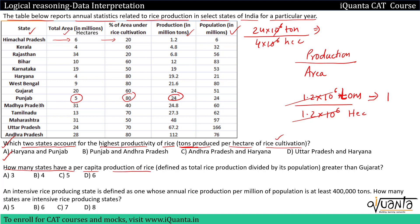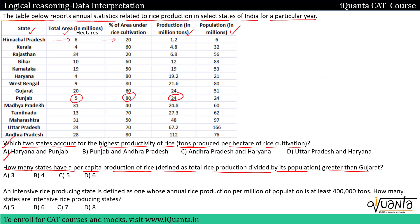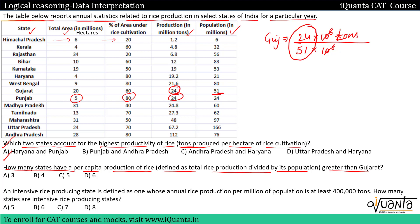The next question: how many states have a per capita production of rice — defined as total rice production divided by its population — greater than Gujarat? For Gujarat, total production is 24 million tons and total population is 51 million. So for Gujarat, the ratio is 24 upon 51 tons per person. We keep this value and compare with all other states.